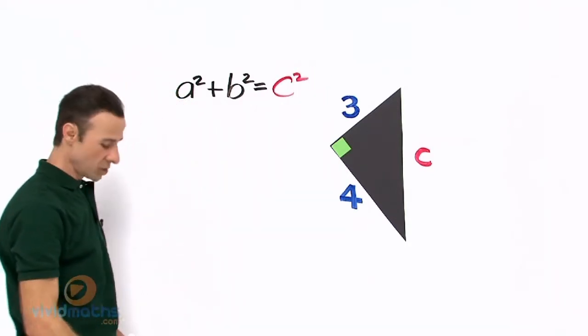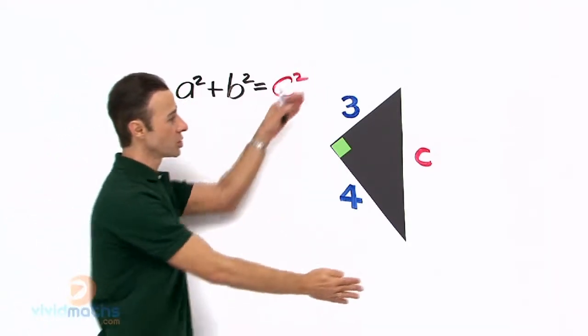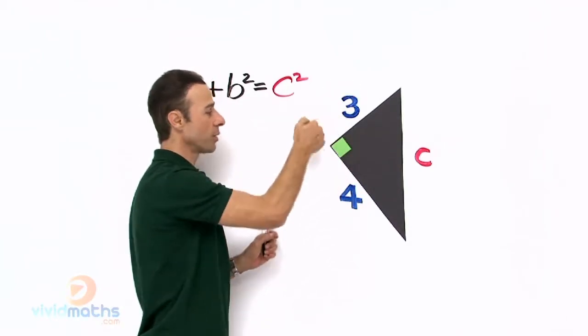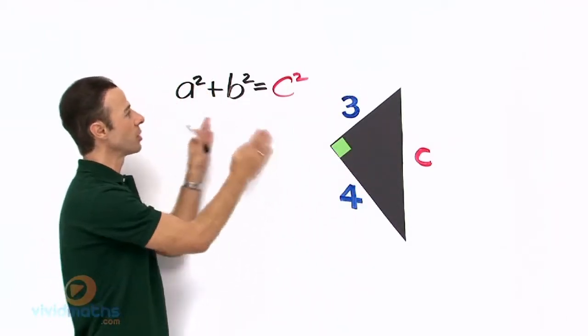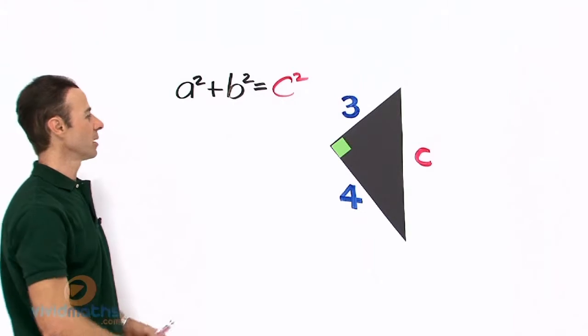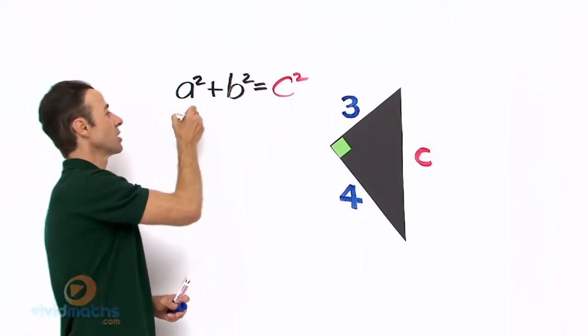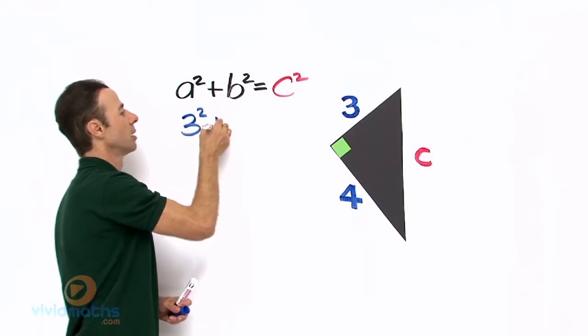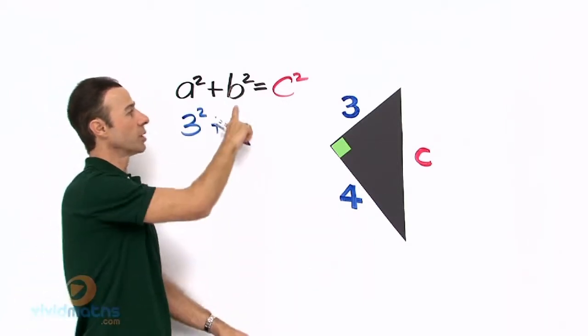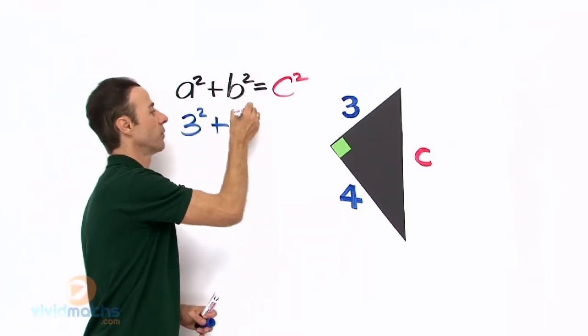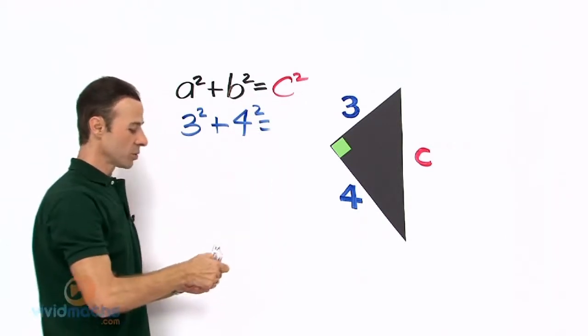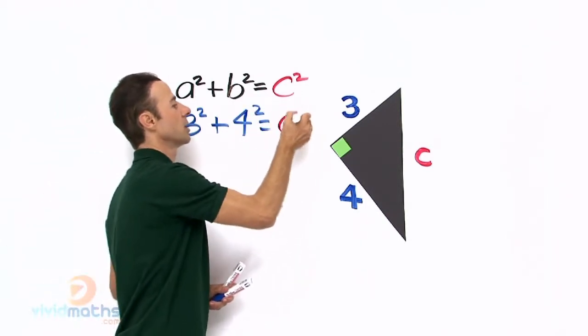Now let us take the two shorter sides which join up here at the right angle, the 3 and the 4, and substitute them into this formula. So let us take the 3 and put it in for a, so that is going to be 3² plus take the 4, put it into b, that is 4², and that equals c².